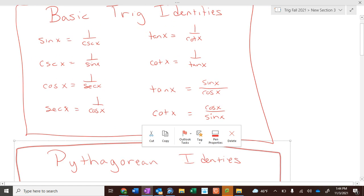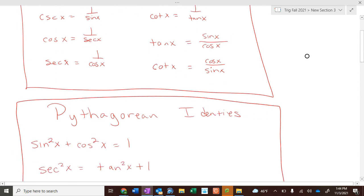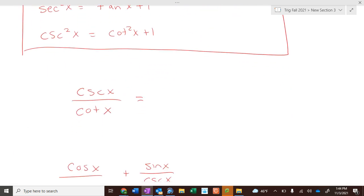So, what we're doing is manipulating trig functions into trig functions with sines and cosines, and then simplifying them accordingly. How do we write cosecant in terms of sines and cosines? Cosecant, under our basic trig functions, is 1 over sine of x. Cotangent is cosine of x over sine of x. What do you call a fraction with fractions in it? A complex fraction. Way to go.